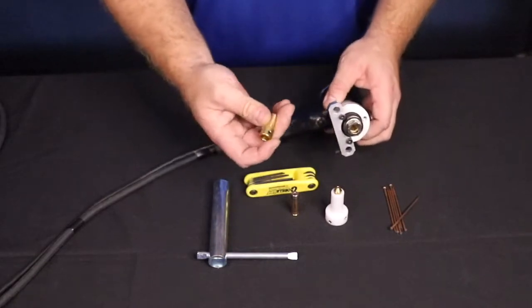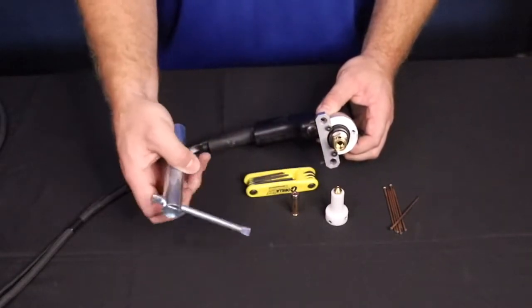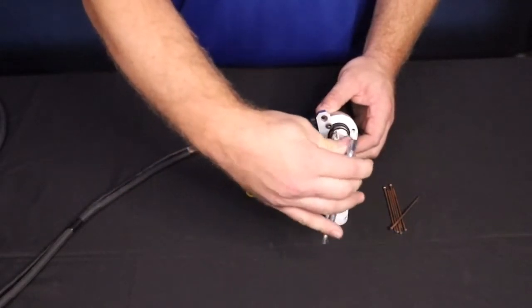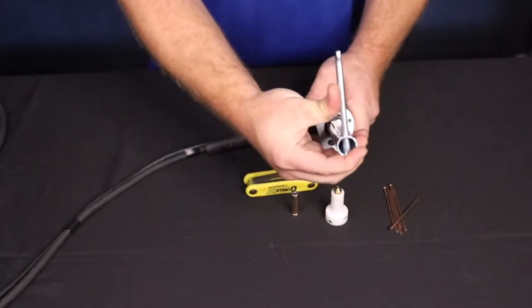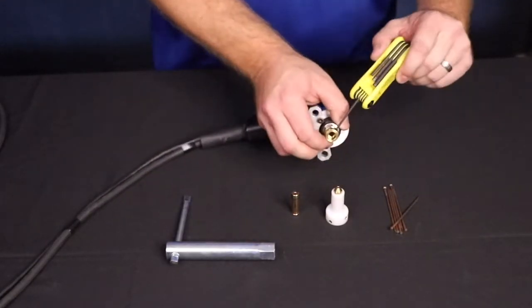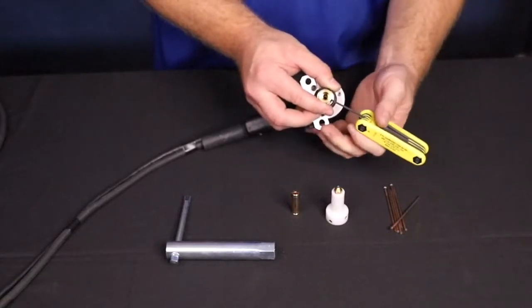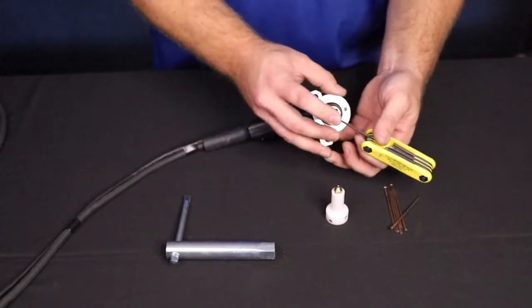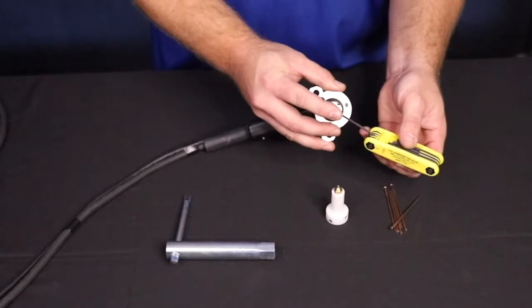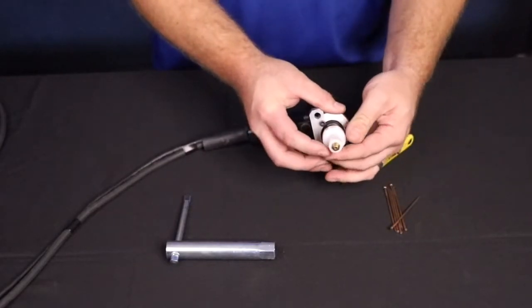To set the gun up for weld pins, install the Euro to B colored adapter as shown. Next, insert the B-collet into the adapter and tighten the set screws snugly. Once the B-collet is installed, place the collar protector over the B-collet and secure as shown.